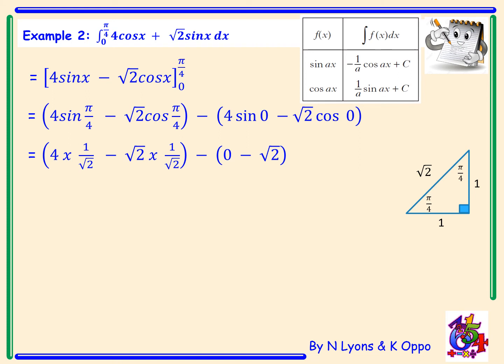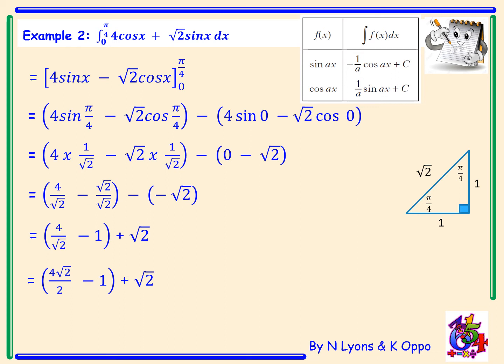If you need to, you can sketch the graphs to find sin of 0 and cos of 0 at the side of your page. Simplifying: 4 times 1 over root 2 becomes 4 over root 2, and root 2 times 1 over root 2 is root 2 over root 2, which is 1. We then have 4 over root 2 minus 1, and the double negative becomes a positive root 2. Rationalising the denominator gives 4 root 2 over 2, which simplifies to 2 root 2. So 2 root 2 minus 1 plus root 2 gives a final answer of 3 root 2 minus 1.